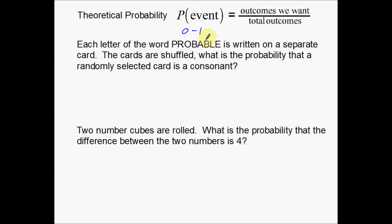Most of these probabilities that we're going to be finding are going to be fractions in between 0 and 1. The probability of an event is always the outcomes that we want over the total number of outcomes that could possibly happen.